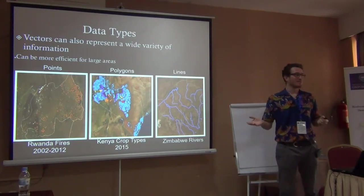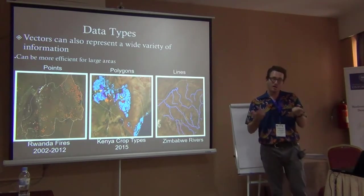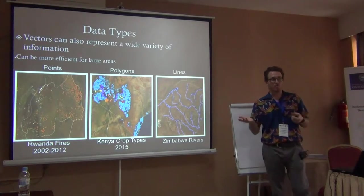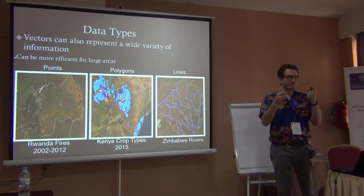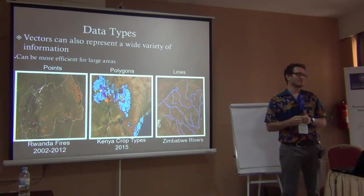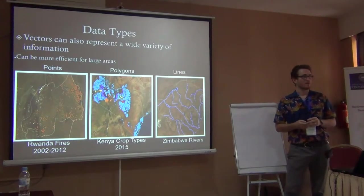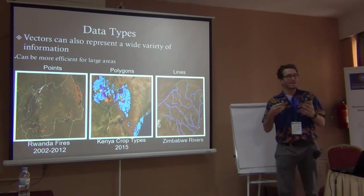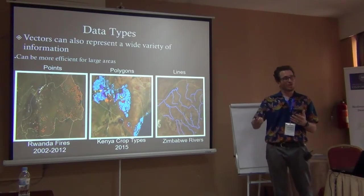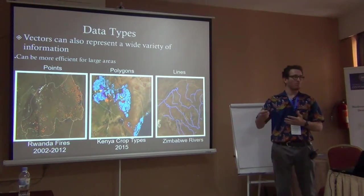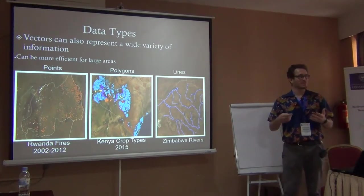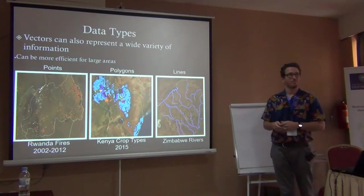Population density is probably a raster, but maybe it could be both — we could show a square of different population densities with a vector as well. When we're thinking about data types, we can also think about the best type of data to represent each variable.